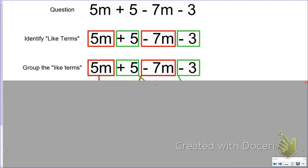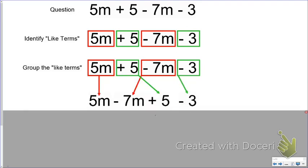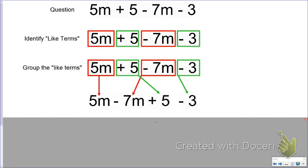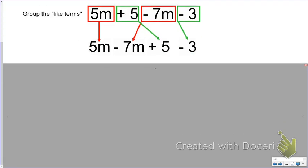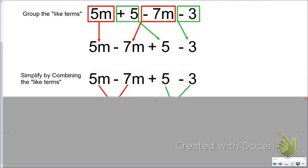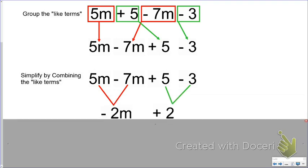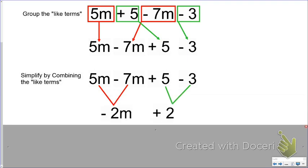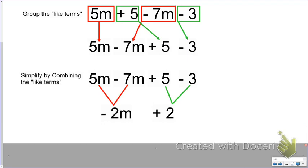Then you're going to group those like terms. I just took the 5M and the negative 7M and I put them together. Notice how I kept the negative with that 7M. I took the 5 and the negative 3 and I put those together as well. Now you can combine those like terms. 5M minus 7M is negative 2M, and 5 minus 3 is 2. So my final answer is negative 2M plus 2. This is the simplified expression. I have just simplified the expression by combining like terms.